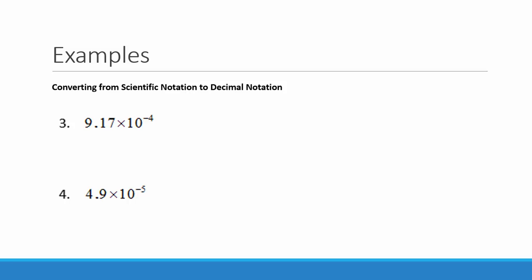In the next example we have 9.17 times 10 to the negative 4. Multiplying by 10 to the negative 4 is going to make this number smaller, so we need to move the decimal place to the left. The number 4 tells us we are going to move it to the left 4 places. We add zeros to hold those places, so this is equal to 0.00917.